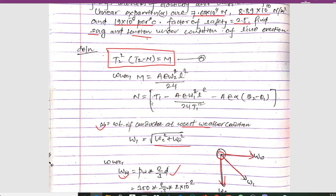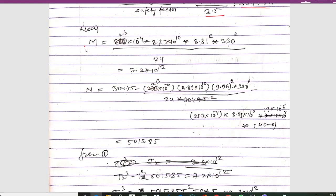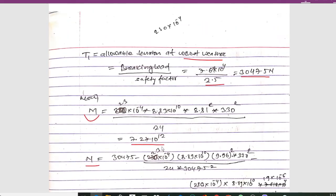For n: n = t1 − AE·w1²·L² / (24·t1²) − AE·α·(θ2 − θ1). Substituting the values of t1, A, E, w1, L, alpha, θ2, and θ1, we get the value of n. After calculation, m = 7.2 × 10¹² and n = 5015.85.